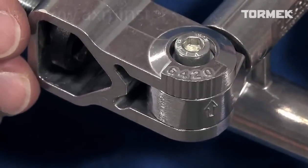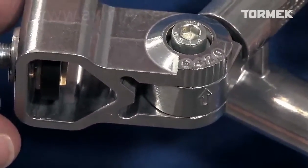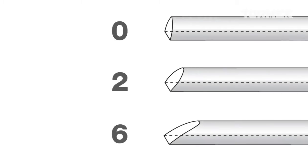You can set the jig to get the shape you want. At zero, you grind an almost straight across profile. At two, you get this shape, and at six, you get even longer side edges.